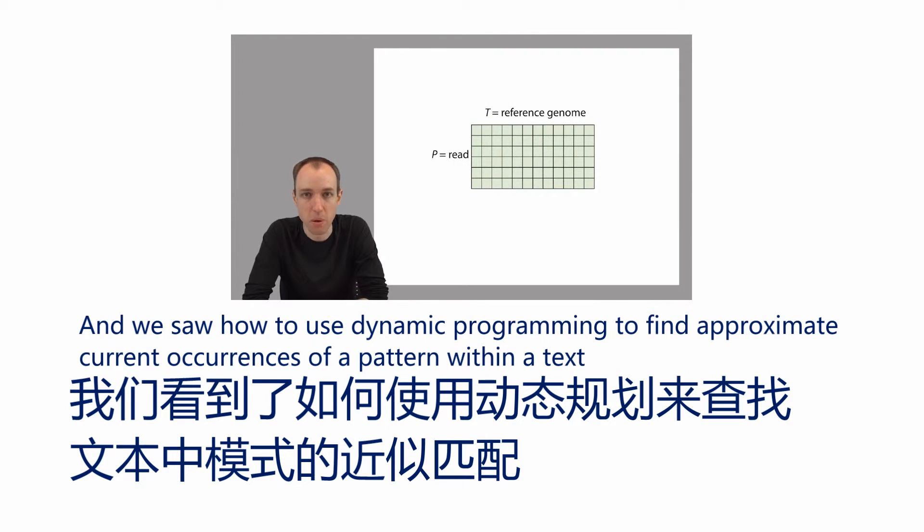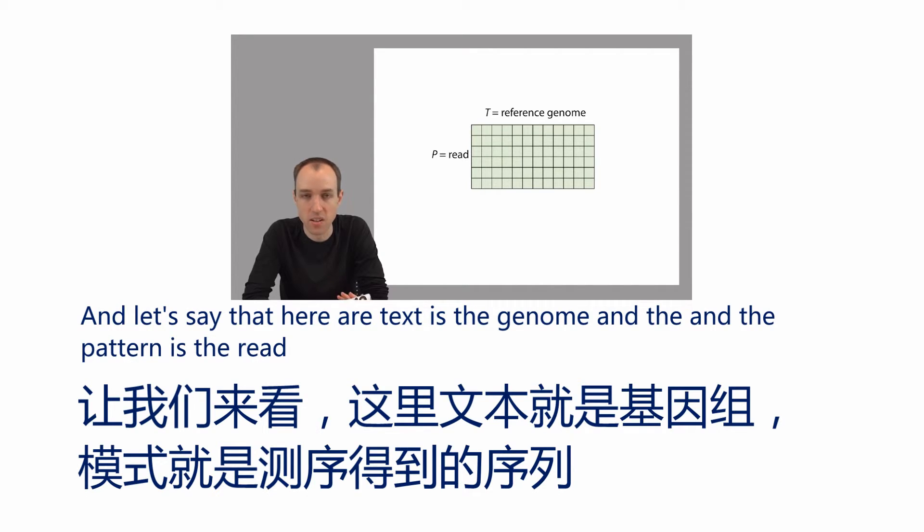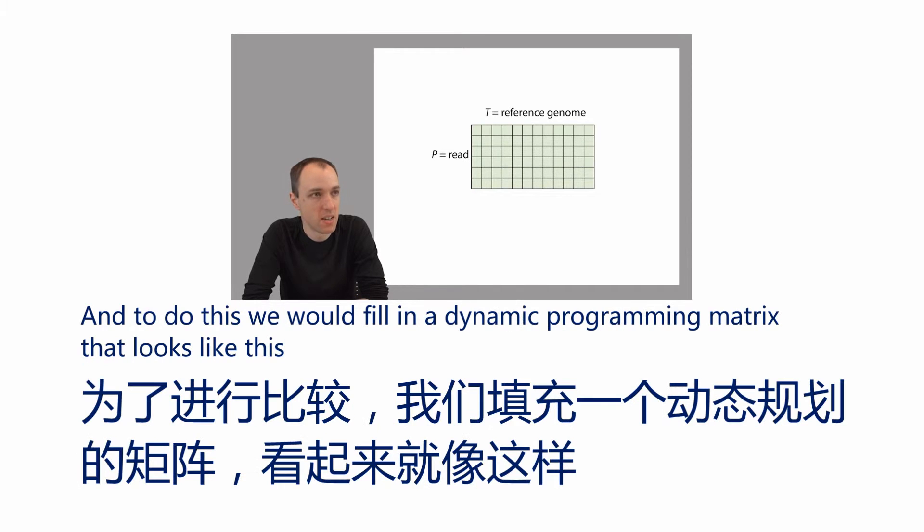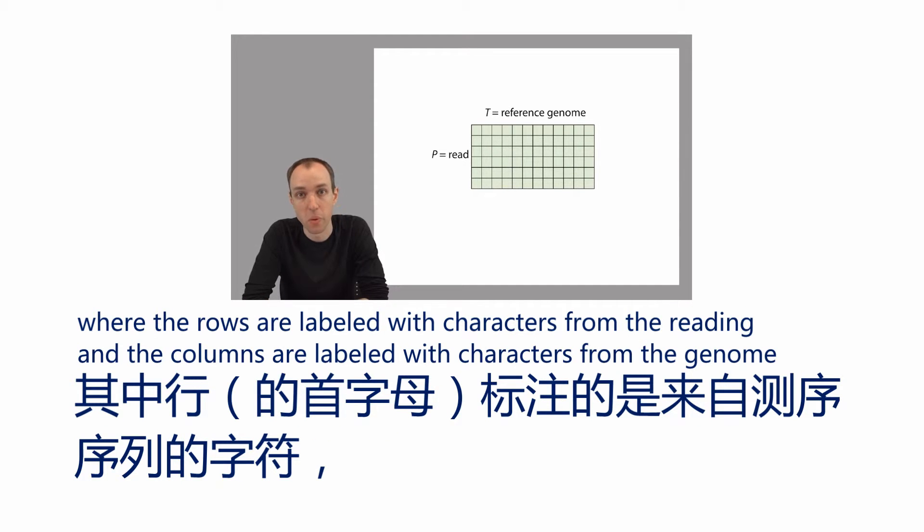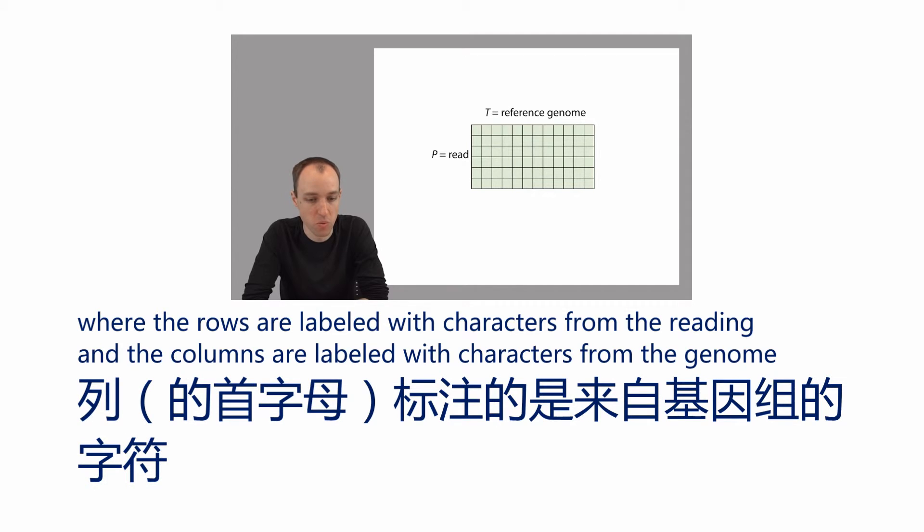We saw how to use dynamic programming to find approximate occurrences of a pattern within a text. Here our text is the genome and the pattern is the read. To do this, we would fill in a dynamic programming matrix where the rows are labeled with characters from the read and the columns are labeled with characters from the genome.